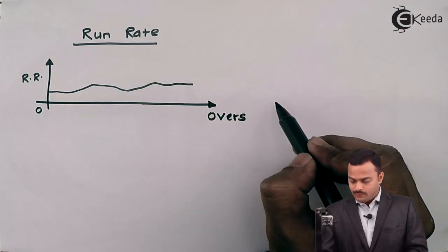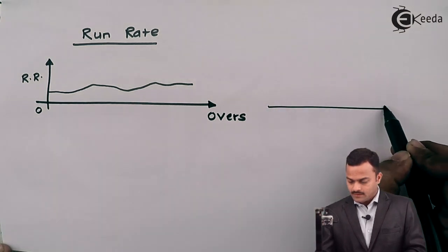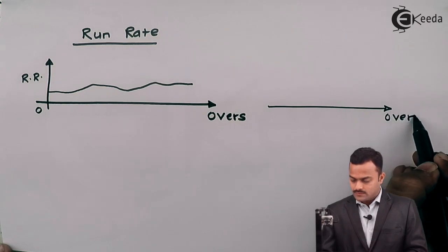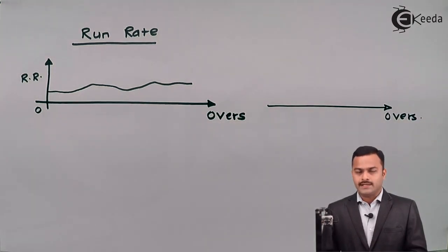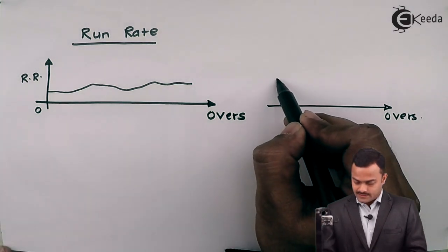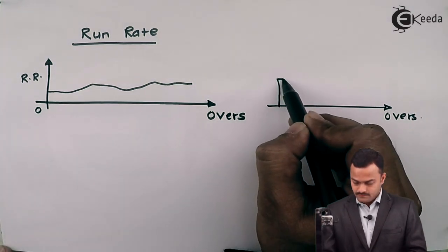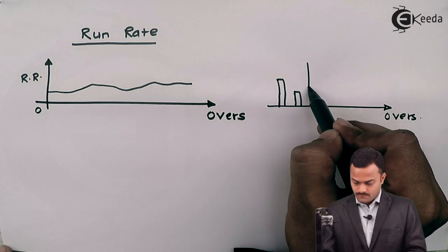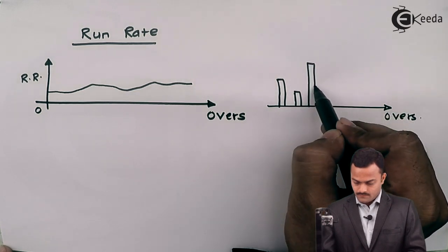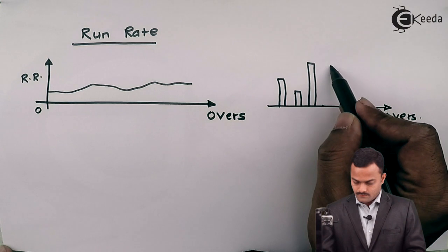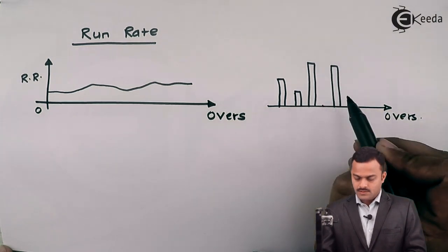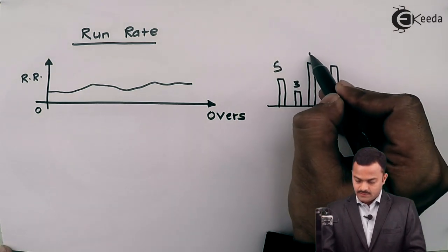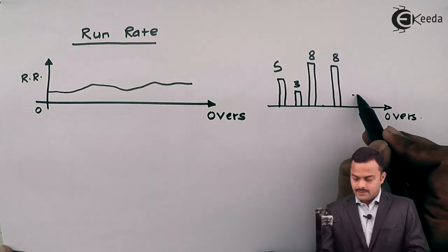Similar to this, I can have one more graph that we can see. And that graph is nothing but overs and how many runs are scored in a particular over. So the graph something like this we have. So let's take an example - this is five, this is three, eight, eight, eight, like that.